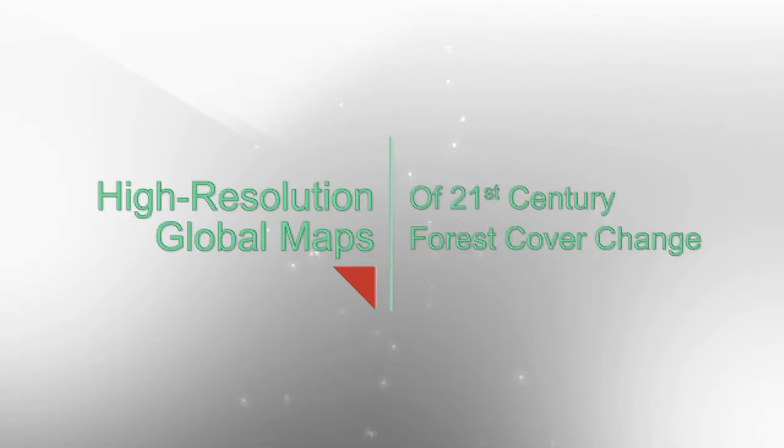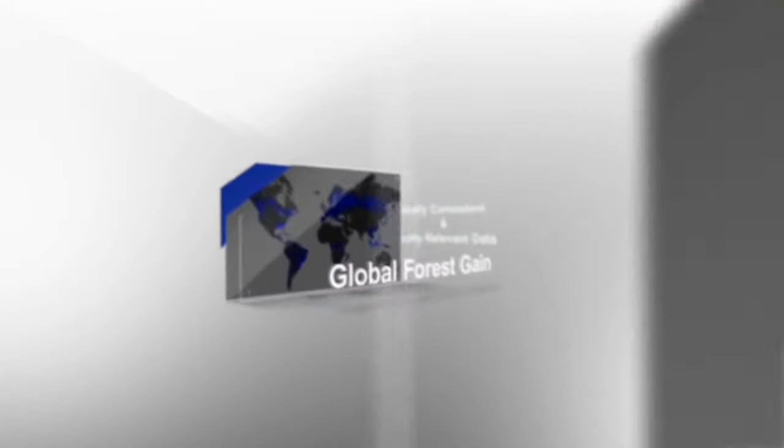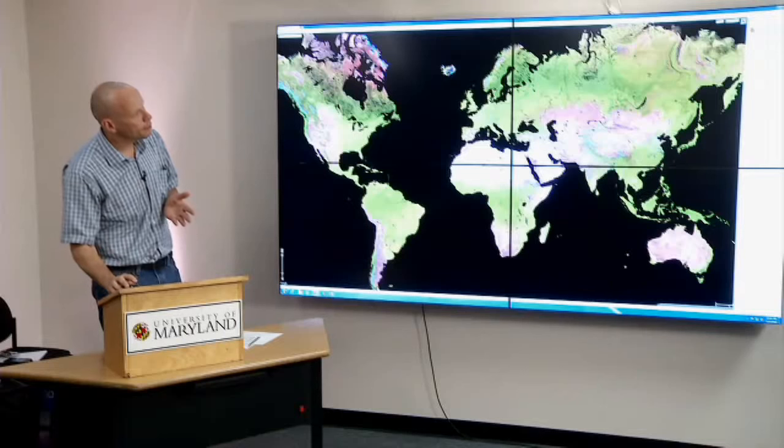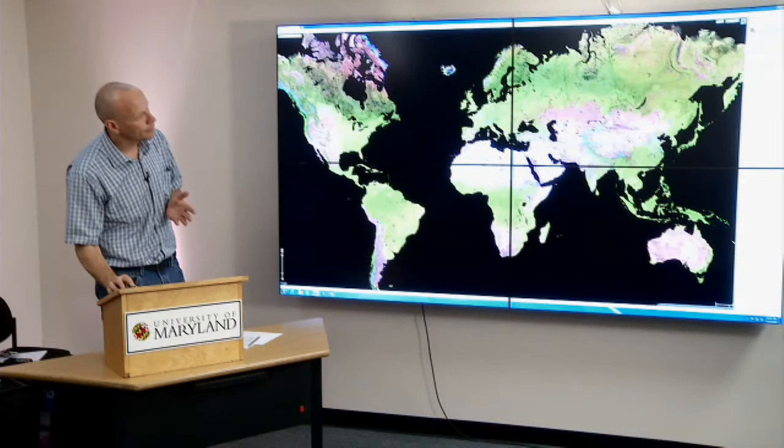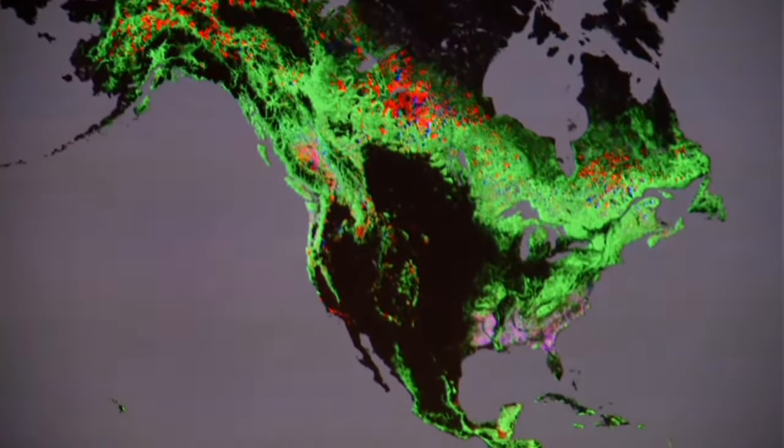We've produced a 30 meter global product of forest loss and gain on a backdrop of tree cover density. So the basic product looks like this and it is a percent tree cover layer from 2000 and then on top of that forest cover loss and gain.